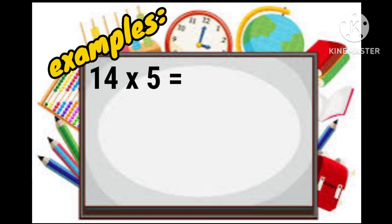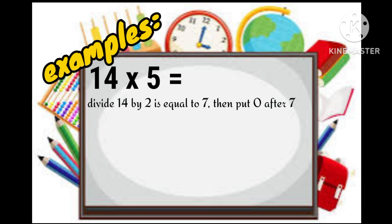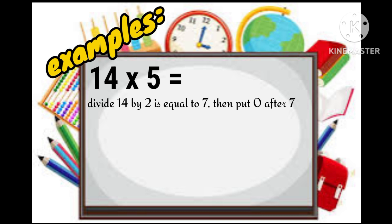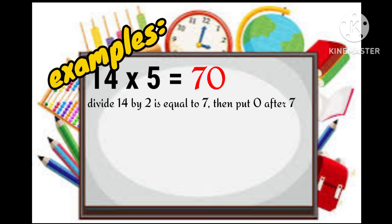So for example, if we have 14 times 5, we divide the number 14 by 2 which is equal to 7 and we put 0 after the number 7. So that means 14 times 5 is equal to 70.